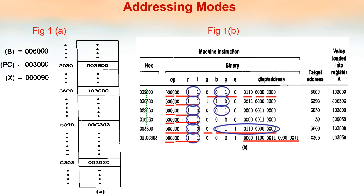Figure 1A shows the content of register B, which is equal to 006000. The content of the program counter is equal to 003000. These figures will be given in the question, and also the instruction values in hex form. We will be asked to find out for each instruction — for example, 032600 is an LDA instruction — the target address and the value loaded into register A. In system software, we represent numbers in hex form because it is easier to write compared to binary form.